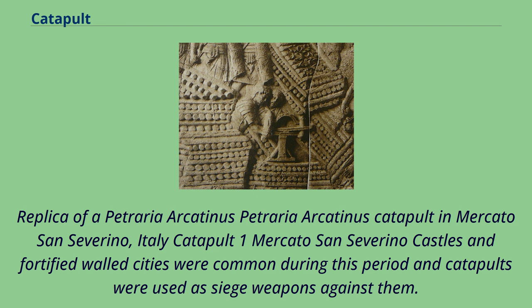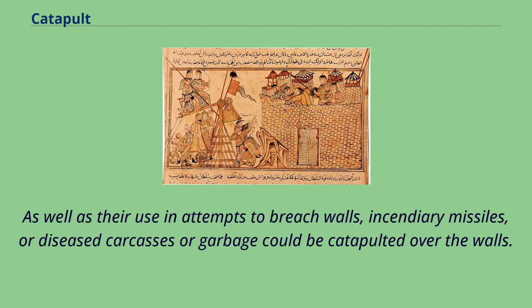Castles and fortified walled cities were common during this period and catapults were used as siege weapons against them. As well as their use in attempts to breach walls, incendiary missiles or diseased carcasses or garbage could be catapulted over the walls.